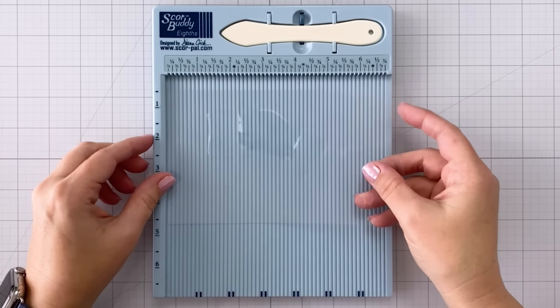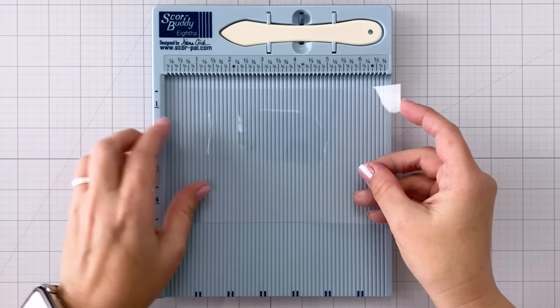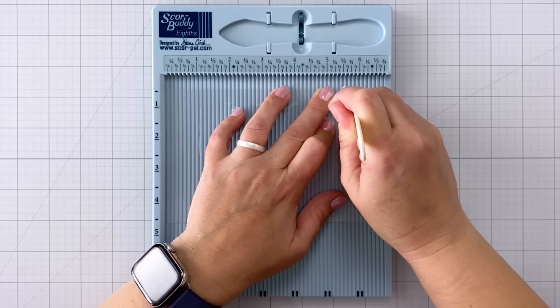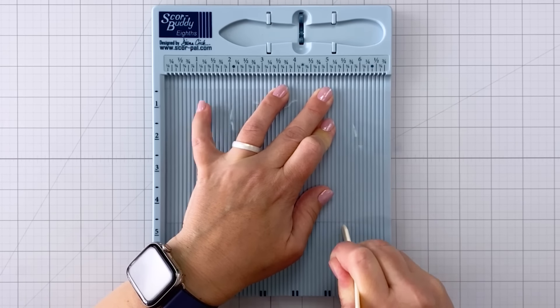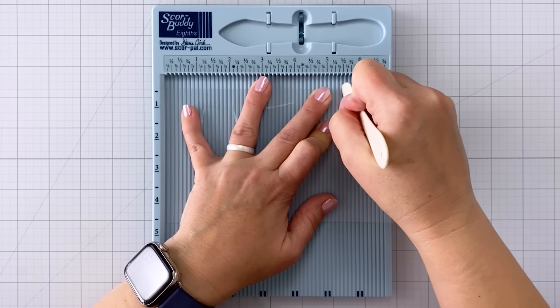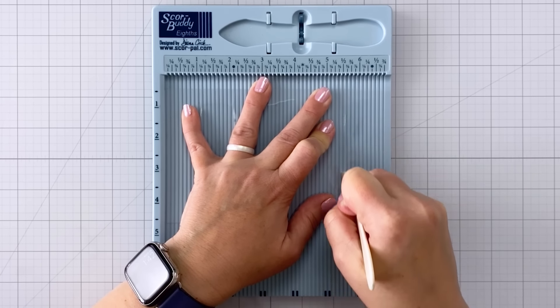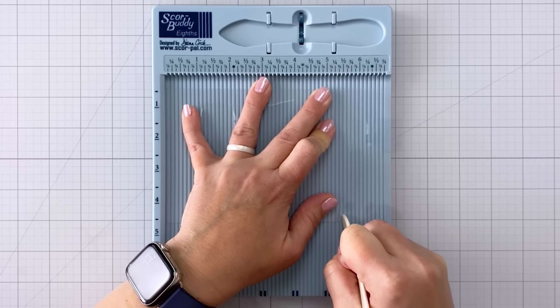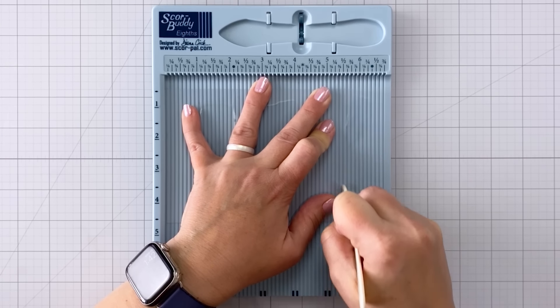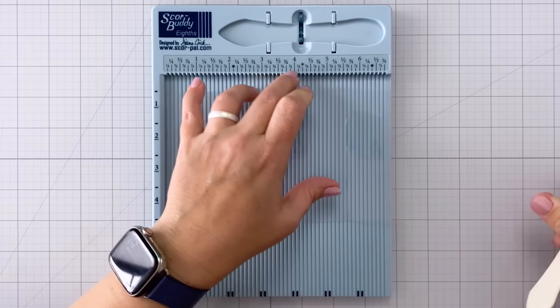So we're going to start out with a piece of acetate and I have cut this to be four and a quarter inches by eight and a half inches. And then I'm using my scoring board here and I'm going to score it along the five and a half inch line. I run it back and forth a few times and then I'm going to fold it over.